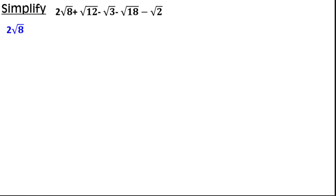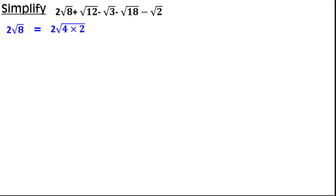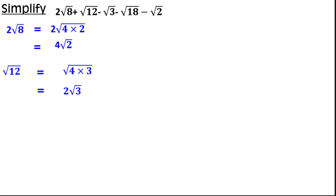Let's simplify: 2 root of 8 plus root of 8 plus root of 12 minus root of 3 minus root of 18 minus root of 2. The terms root 8, root 12, and root 18 are not in simplest form. We write 8 as 4 times 2, so 2 root 8 becomes 2 times 2 root 2, which is 4 root 2. Root 12 equals root of 4 times 3, which is 2 root 3. Root 18 equals root of 9 times 2, which is 3 root 2.